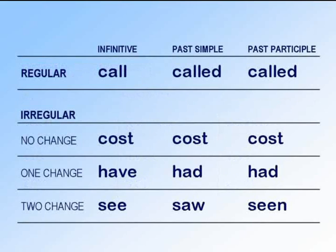We can see three families of irregular verbs. Firstly, the no-change verbs, where the infinitive, the past simple and the past participle are all the same. This is really easy. Listen and repeat: cost, cost, cost.